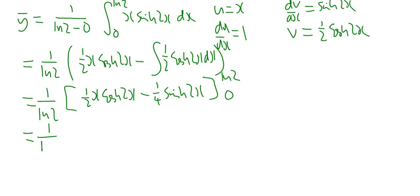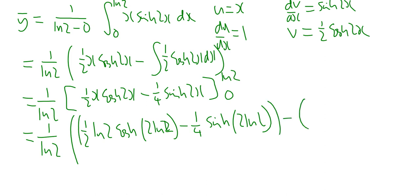That's going to give me 1 over ln2 into, when you stick in ln2 into this function, you get a half ln2 times the cosh of 2ln2, minus a quarter times the sinh of 2ln2. That's what you get if you stick ln2 in. Take away, if you stick in 0, on the first factor you've got a factor of 0, so that's 0, and the second factor you have sinh of 0, which is 0.